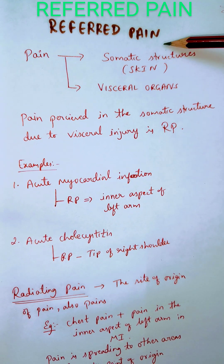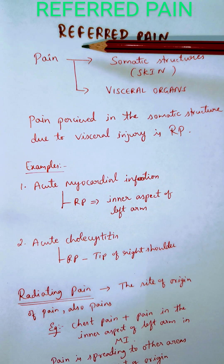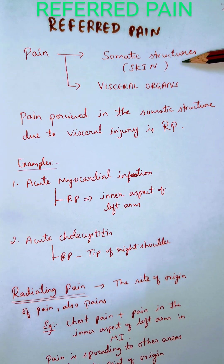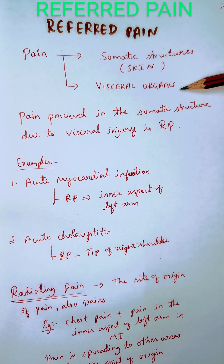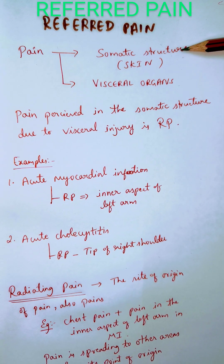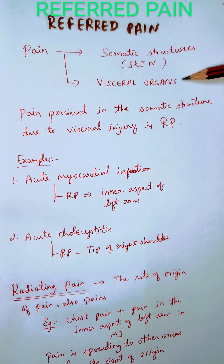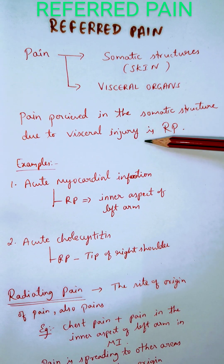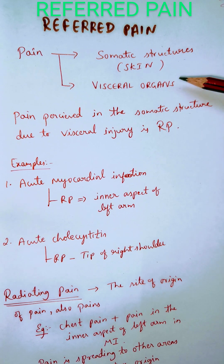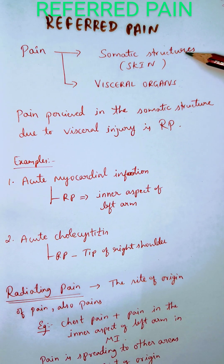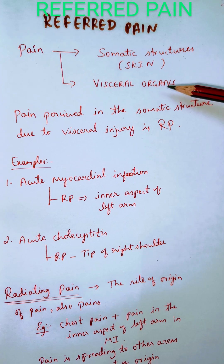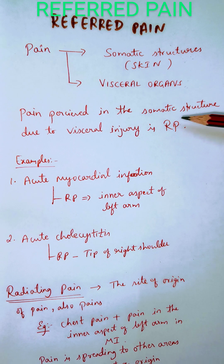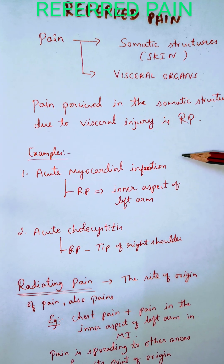In this video we'll learn about referred pain. Pain can arise either from somatic structures like skin or muscles, or from visceral organs. Whenever pain is perceived in a somatic structure due to visceral injury, we call it referred pain — meaning the injury is to the visceral organ but the patient feels the pain in the skin. That is called referred pain: the pain from the visceral organ is referred to the skin.